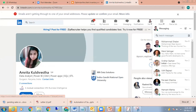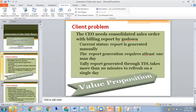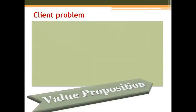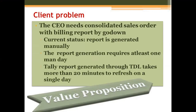The client problem was that the CEO of this particular company needed the consolidated sales order report with billing by go down. He wanted complete visibility starting from the original sales order down to sales invoice and delivery note, down to the billing receipt. Currently this report is generated manually and requires at least one man-day. A TDL team had also made this report, but it takes more than 20 minutes to refresh on a single day.